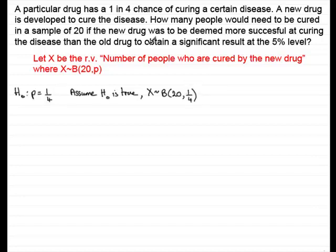In this situation we would expect one quarter of 20 people to be cured by the new drug, which is five people. Since we want this drug to be more successful, the alternative hypothesis is H1: P is greater than one quarter.